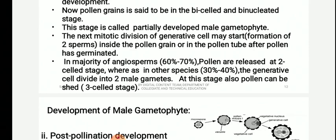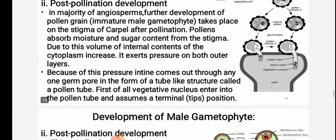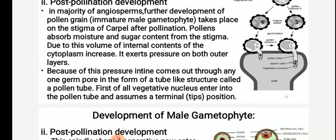The bicelled stage is called the partially developed male gametophyte. The next mitotic division of the generative cell may start inside the pollen grain or in the pollen tube after the pollen has germinated. In the majority of angiosperms, pollen is released at the two-cell stage, having a vegetative cell and a generative cell. But in a few angiosperms, the pollen grain can be shed at the three-cell stage — with the generative cell undergoing one more mitosis to produce two male gametes. In post-pollination development, further development of pollen takes place on the stigma; pollens absorb moisture and sugar content of the stigma, and the volume of internal cytoplasm increases.